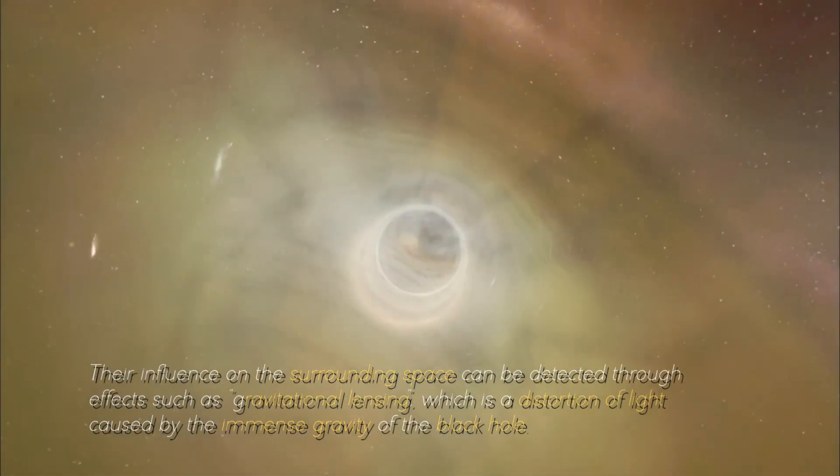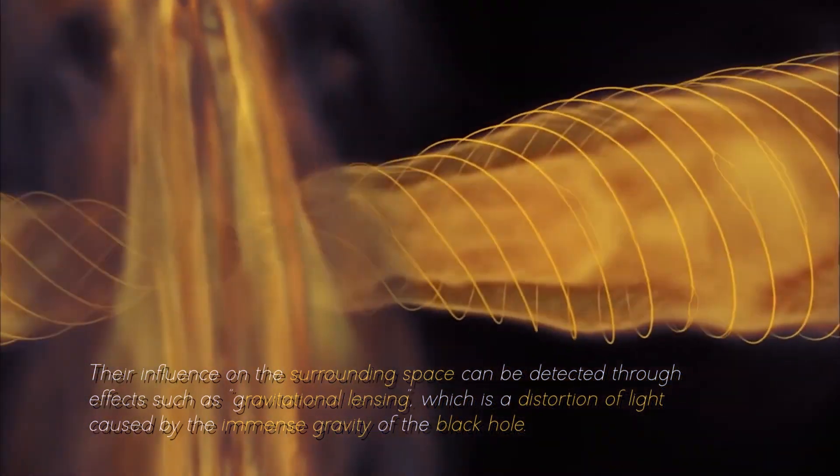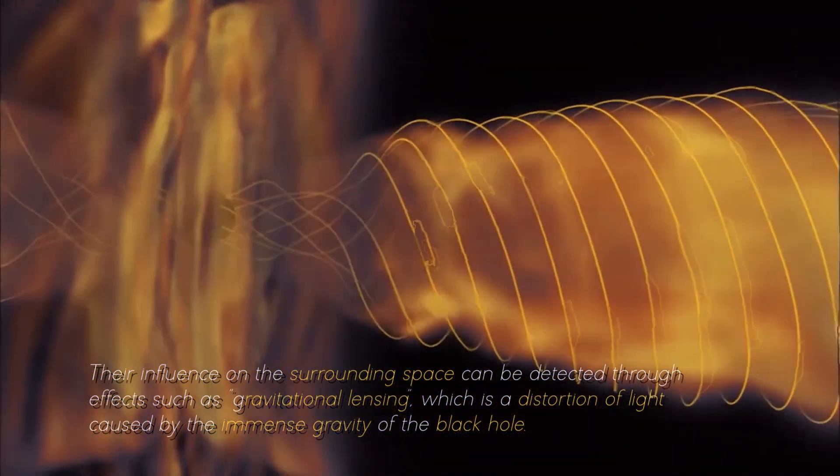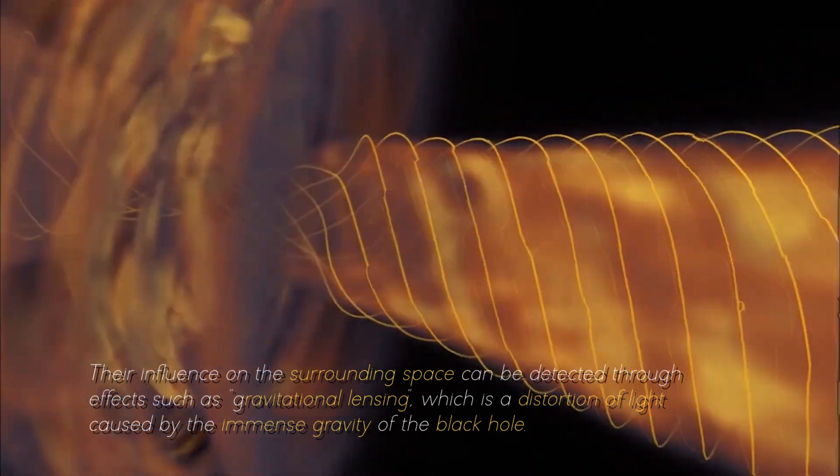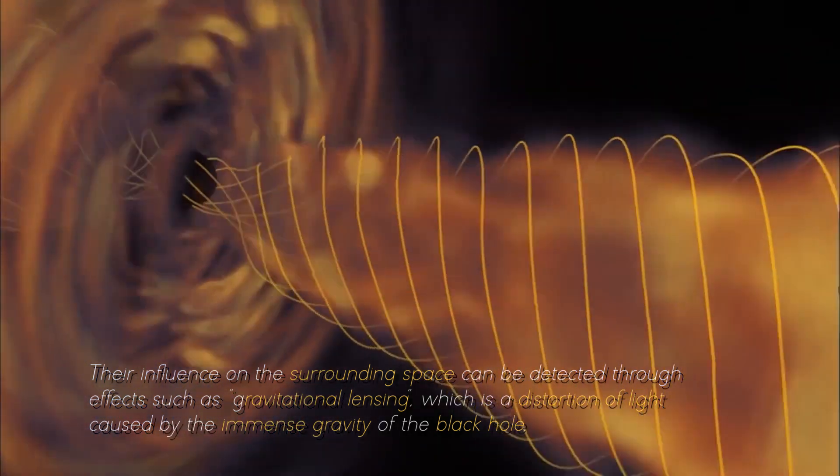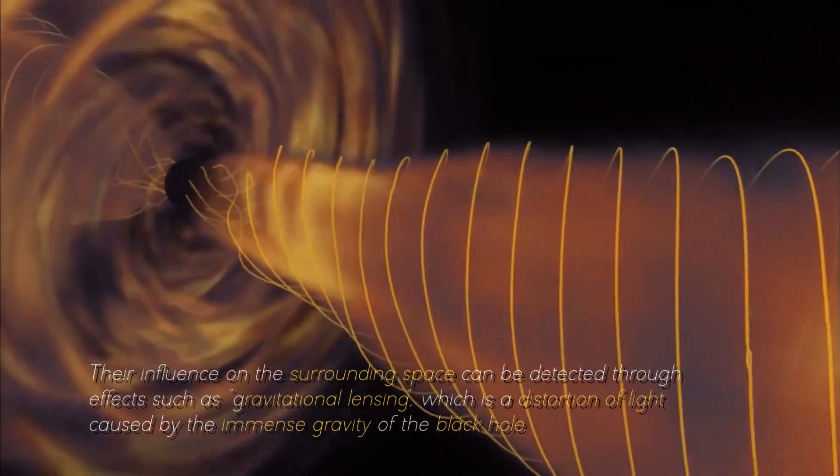Their influence on the surrounding space can be detected through effects such as gravitational lensing, which is a distortion of light caused by the immense gravity of the black hole.